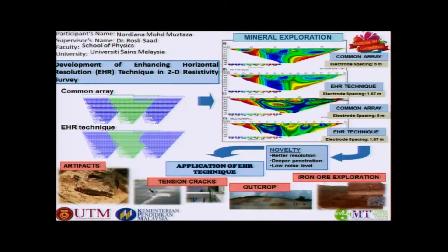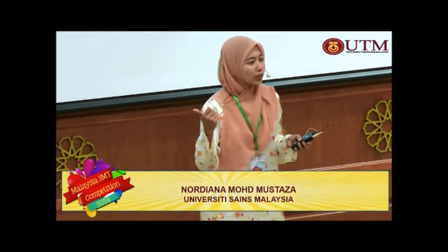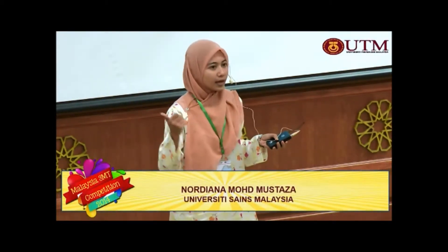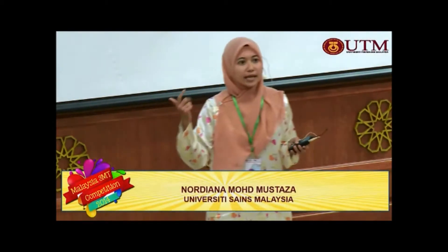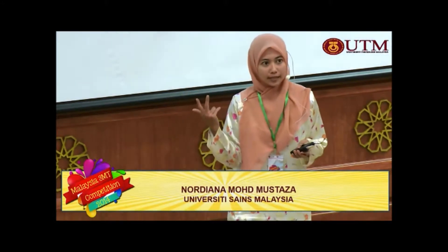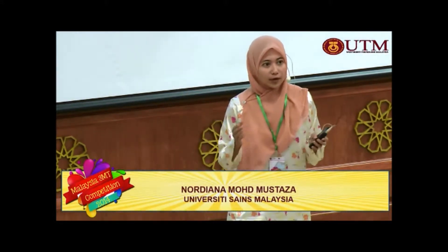2D resistivity is one of the geophysical methods used to detect ground subsurface using electrical properties. The present 2D resistivity has a few disadvantages, such as depth of penetration, which is related to the electrode spacing, resolution, and high noise level.